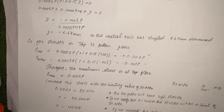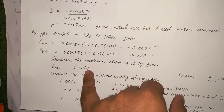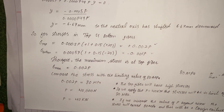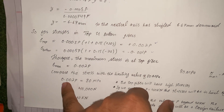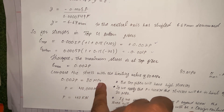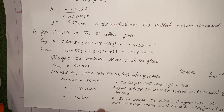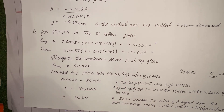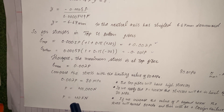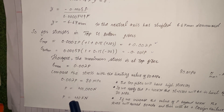Comparing the maximum stress value with the limiting stress given in the problem: 0.002P = 80 MPa. Solving for P gives 40,000 N, or 40 kN. If we apply a force of 40 kN, the stresses remain within the 80 MPa limit. If the force exceeds 40 kN, the stresses will exceed this limit and design failure will occur.